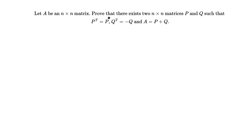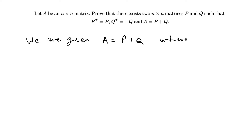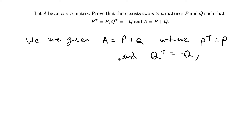To begin this proof I'm just going to rewrite everything that we're given. We are given that A is equal to P plus Q, where P transpose equals P — this means P is a symmetric matrix, since when the transpose of a matrix equals itself, it's symmetric. And Q transpose equals negative Q, which means Q is a skew-symmetric matrix.